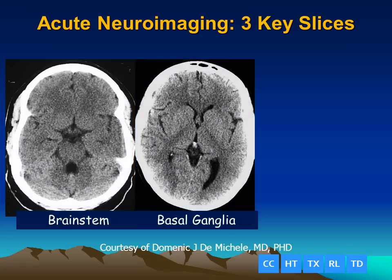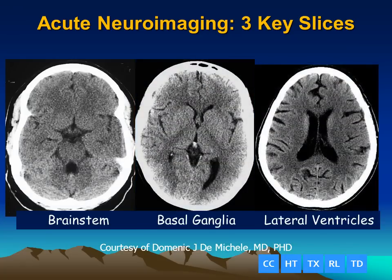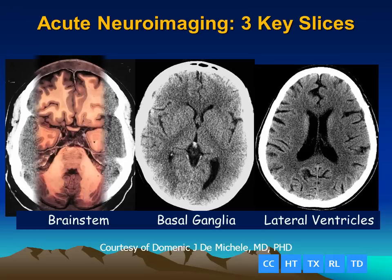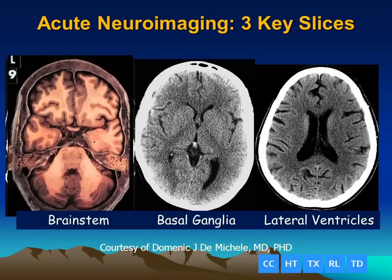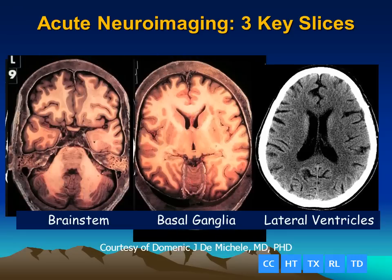The basal ganglia, and the level of the lateral ventricles. We should inspect these for the normal size and position of the ventricles, as well as visibility of the sulci, and the demarcation between the gray matter and the white matter.